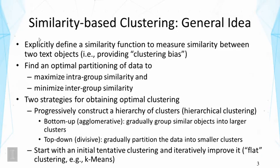The general idea of similarity-based clustering is to explicitly specify a similarity function to measure the similarity between two text objects. This is in contrast with a generative model where we implicitly define the clustering bias by using a particular objective function like a likelihood function. Here we explicitly provide a view of what we think are similar, and this is often very useful because it allows us to inject any particular view of similarity into the clustering program.